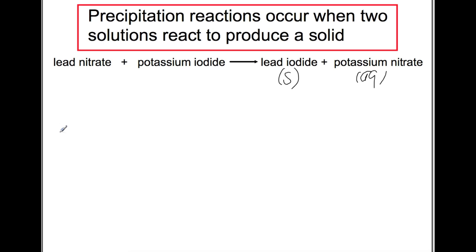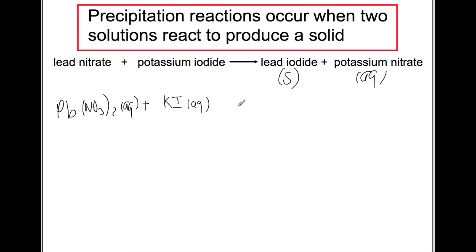To begin looking at spectator ions we need to first write this out as a balanced equation. Lead has a valency of 2, so it's Pb, and nitrate has a valency of 1, so Pb(NO₃)₂ aqueous plus potassium iodide KI aqueous to produce lead iodide PbI₂ solid and potassium nitrate KNO₃ aqueous.